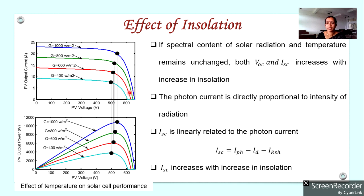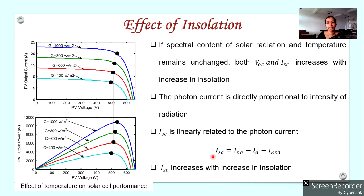The short circuit current is directly related to irradiance. Short circuit current Isc is a linear function of the photon-generated current IpH. Isc equals IpH minus the diode current minus the leakage current. So Isc is directly related to IpH, and IpH is a direct function of solar irradiance level. When solar irradiance increases, IpH increases and as a result Isc also increases considerably with increase in irradiance.